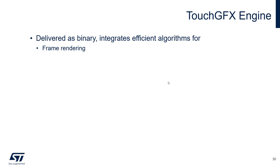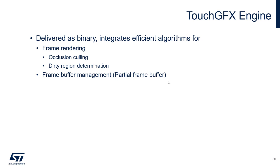If part of a background image is covered by a button, that covered part will not need to be refreshed because it is hidden by an object. The dirty region determination algorithm defines, depending on the state of the user interface, which area needs to be updated — for example, if you have an animated image, only the area containing that moving image will be updated; the rest is kept as-is in the frame buffer and sent as-is to the display. Frame buffer management — especially for partial frame buffers — is also handled by the TouchFX Engine, which splits the rendering of a frame into several passes.